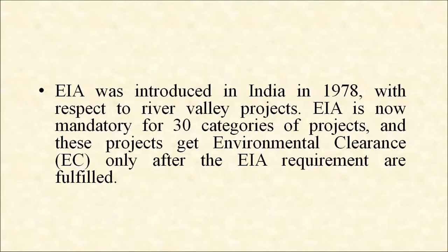EIA was introduced in India in 1978 with respect to river valley projects. EIA is now mandatory for 30 categories of projects, which get environmental clearance only after EIA requirements are fulfilled. These include nuclear power and related projects, river valley projects, ports, harbors, petroleum refineries, chemical fertilizers, pesticides, petrochemical complexes, bulk drugs and pharmaceuticals, exploration for oil and gas, synthetic rubber, asbestos products, hydrocyanic acid and its derivatives, primary metallurgical industries of iron and steel, aluminium, copper, zinc, lead and ferroalloys, and chloralkali industries.